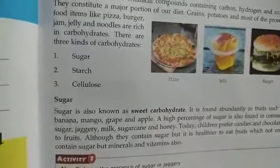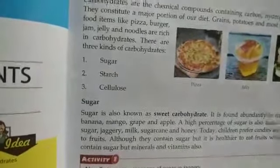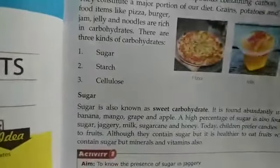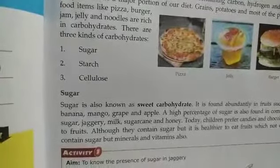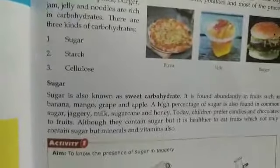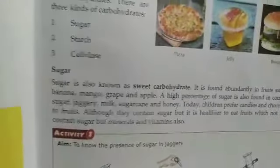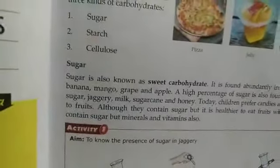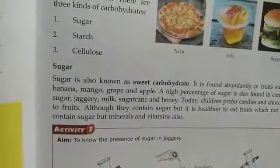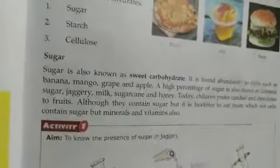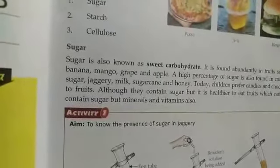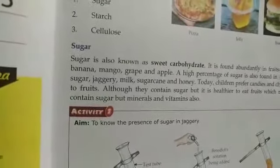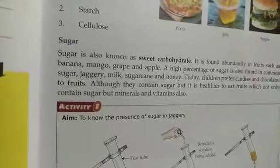Sugar is the form of carbohydrate present in our house — what we commonly know as sweet carbohydrates. Sugar is found in fruits like banana, mango, grape, and apple. Common sugar is also present in jaggery, which is good. Milk, sugar cane — everyone must have had sugar cane juice in the season — that is also sugar.